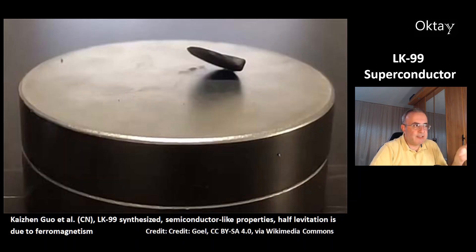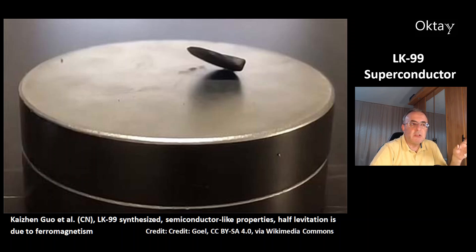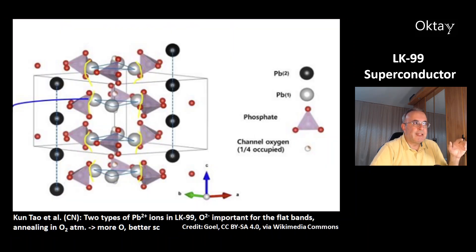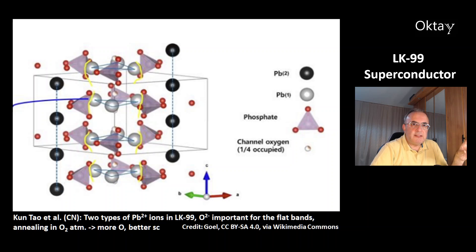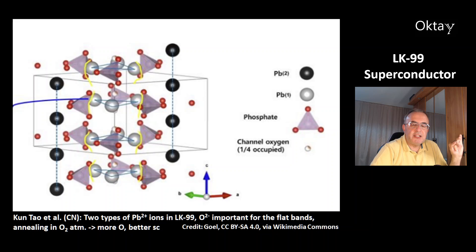This is another work from Taizeng Wu and colleagues from China. They also produced LK-99, but according to these scientists it has just semiconductor-like properties, and the half-levitation is due to ferromagnetism. There is also work from Kuntao and colleagues from China. They note there are two types of lead ions in LK-99, and the oxide ions are very important for the flat bands. They propose annealing in an oxygen atmosphere to add more oxygen to the structure, and they predict a better superconductor than LK-99 by this method.